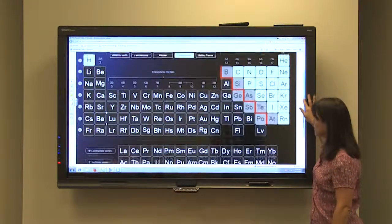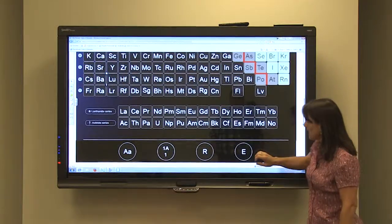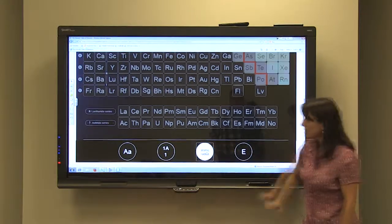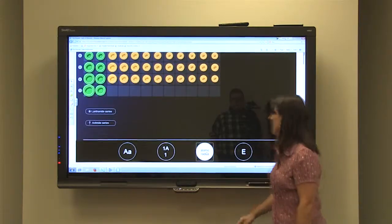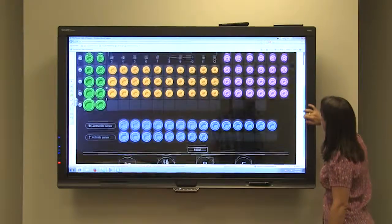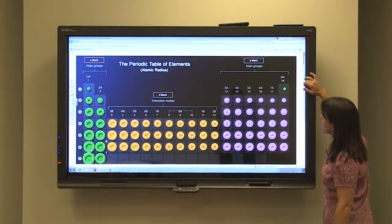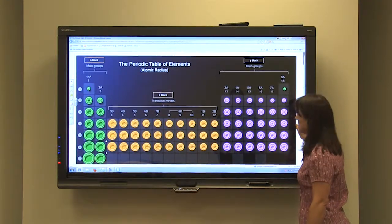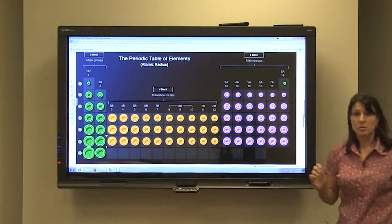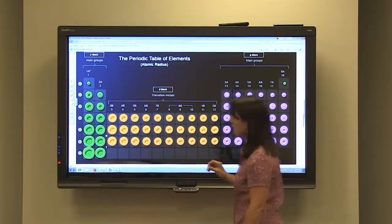Another periodic trend that we can look at is size, radius of the atoms. In terms of size, this chart, this periodic table shows you the atomic radius of the elements.